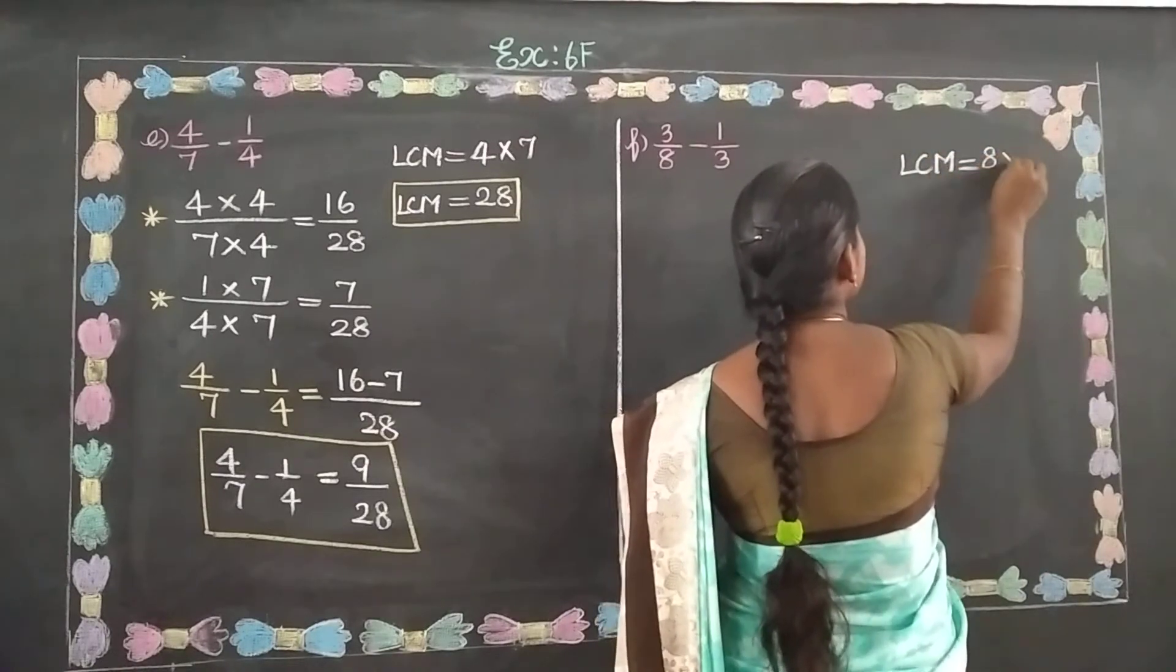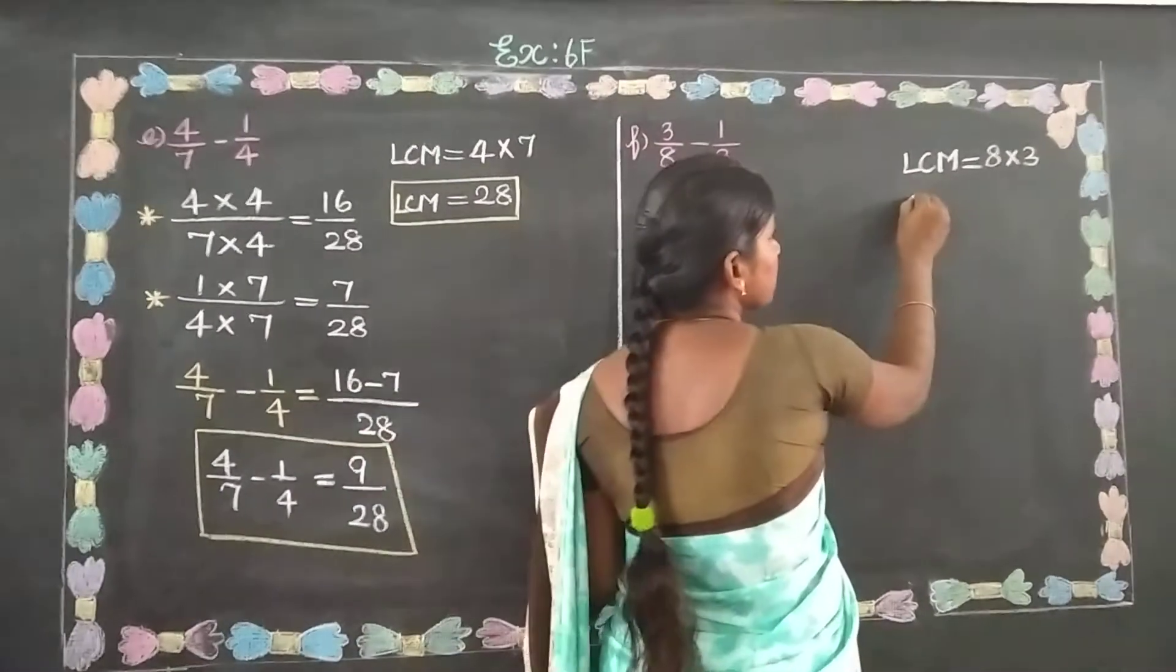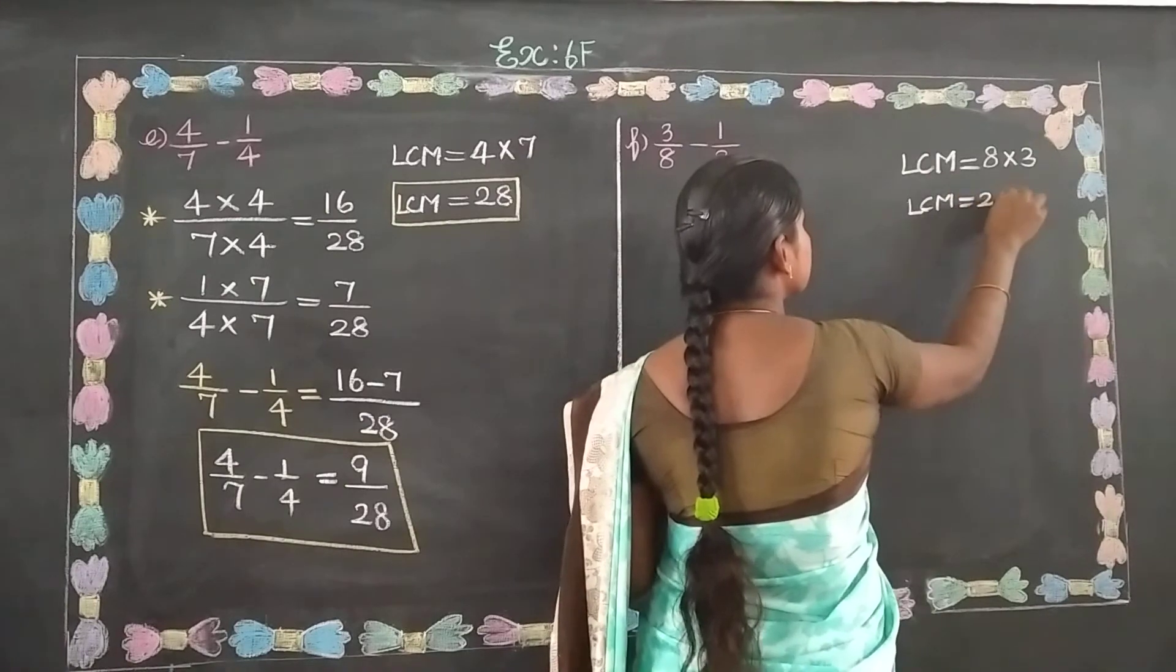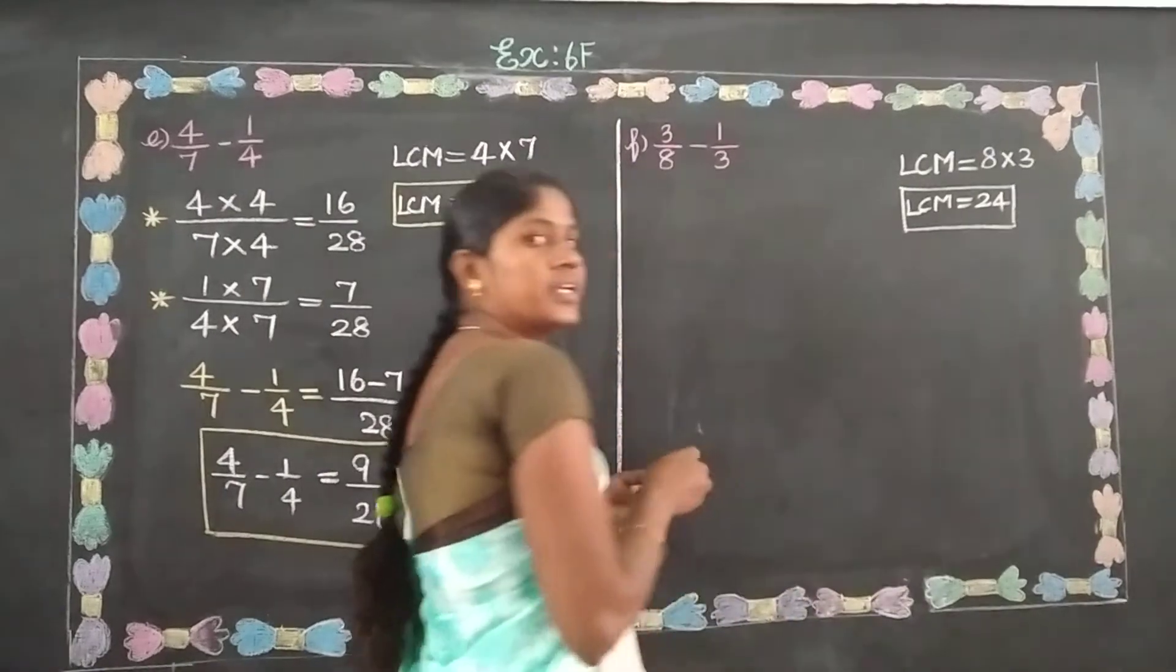So LCM equals 8 times 3. 8 threes are 24. So LCM equals 24.